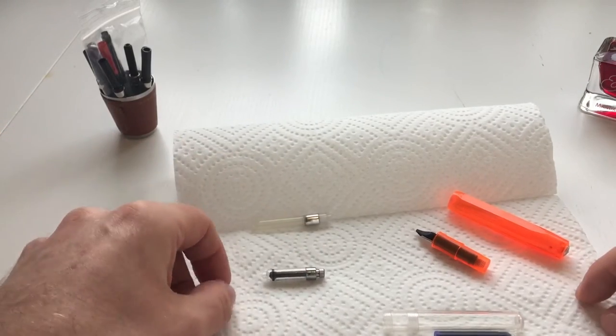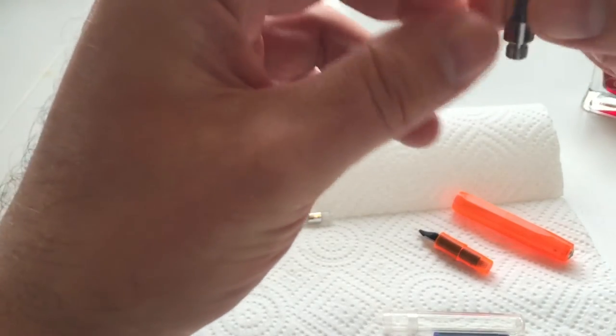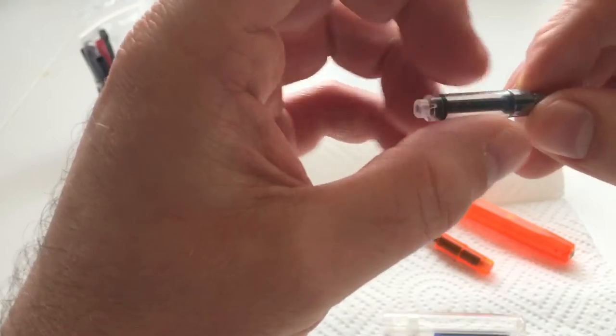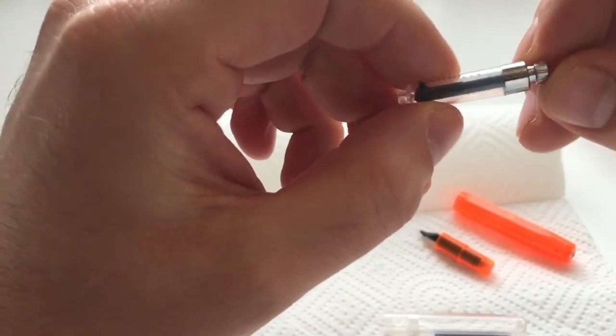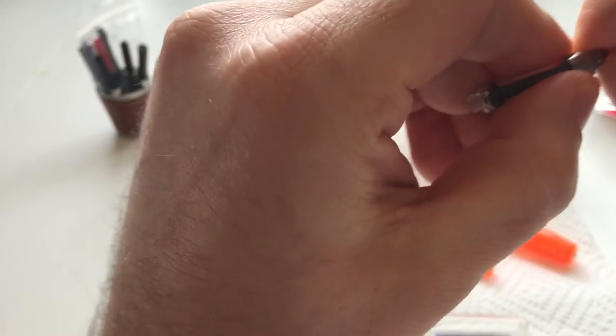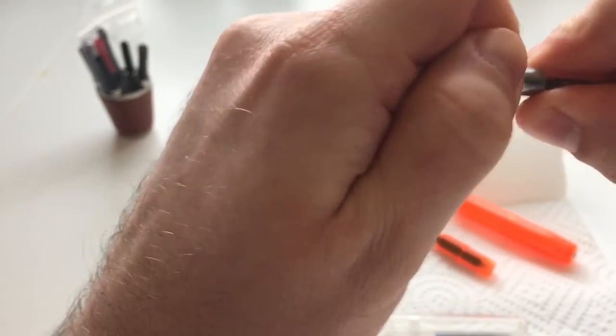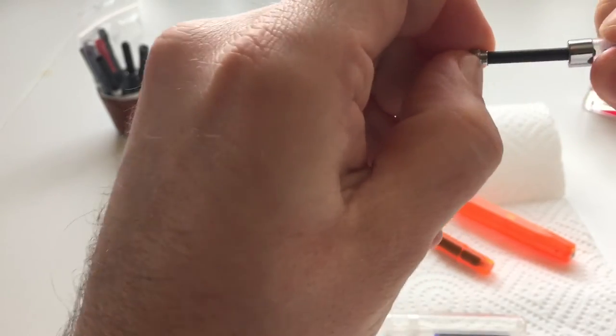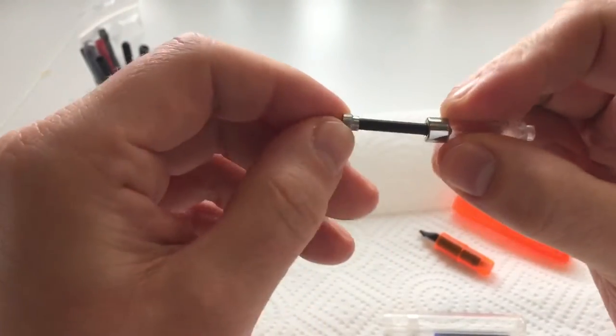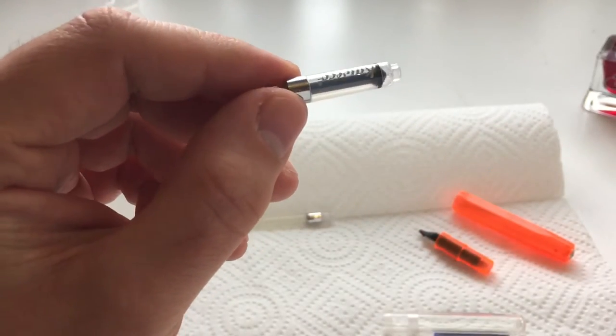I'll compare both converters on how they perform and feel. This is the new piston converter. It's a push piston with a metal screw, and you basically just pull it out like this. That's how you're going to fill the fountain pen.